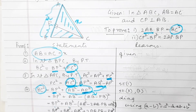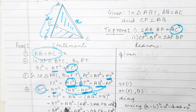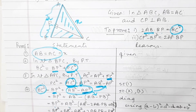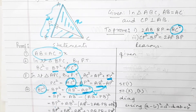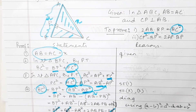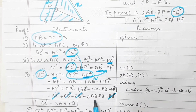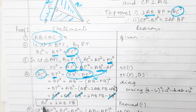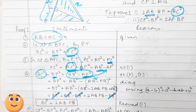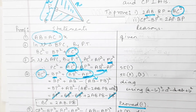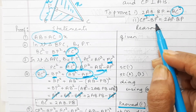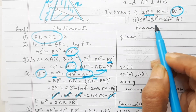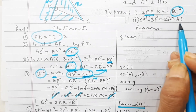Now we open the brackets: BP square plus AB square, and each term inside the bracket changes sign — so minus AB square plus 2 AB into BP minus BP square. You will see that BP square and BP square cancel, and AB square and AB square cancel, leaving only 2 AB into BP. So BC square is equal to 2 AB into BP, and that is our first proof.